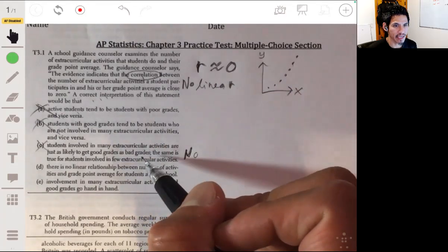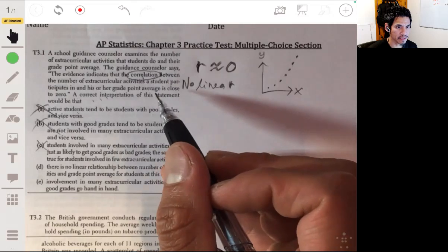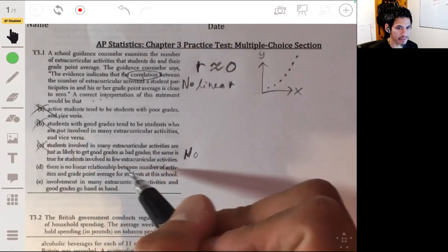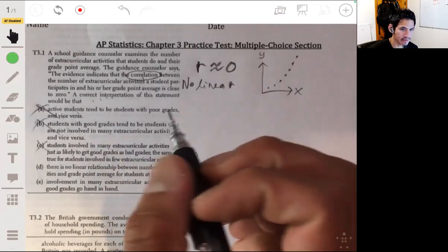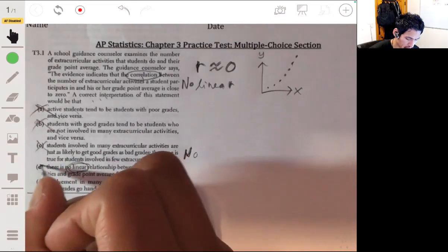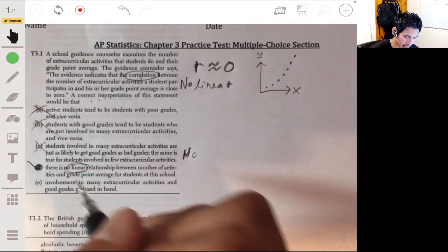We can't say any of these from just this information. Option D: there is no linear relationship between the number of activities and grade point average for students at the school. See how it specifies no linear relationship? This would be what we can say, so our answer would be D.